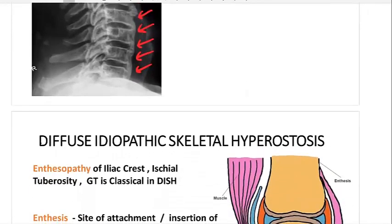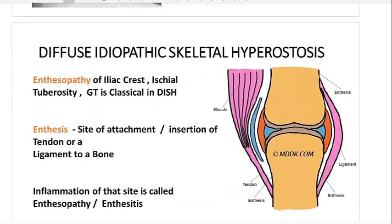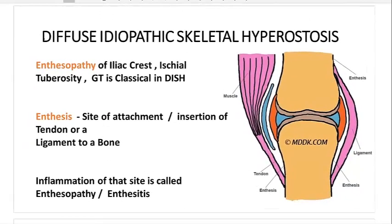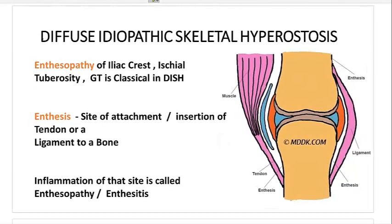In the definition, I mentioned bone formation with tension at the insertion of ligaments and tendons. Now let's go back to basics and understand the word 'enthesis.' Enthesis is the site of attachment or insertion of a tendon or ligament onto a bone. This particular part of the bone where a tendon or ligament inserts is what is called enthesis.